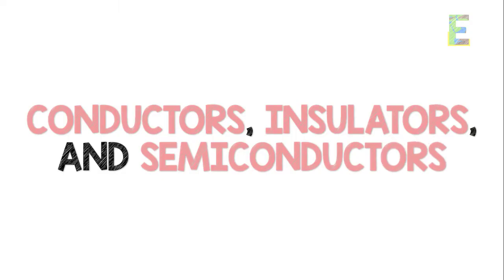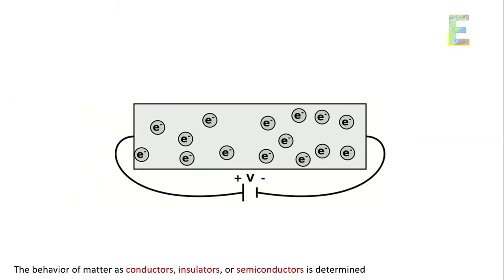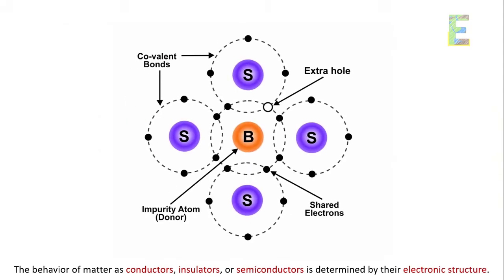Conductors, insulators, and semiconductors. The behavior of matter as conductors, insulators, or semiconductors is determined by their electronic structure. It's why some materials conduct electricity while others don't.